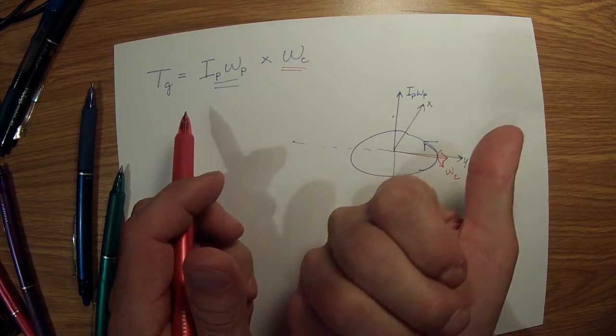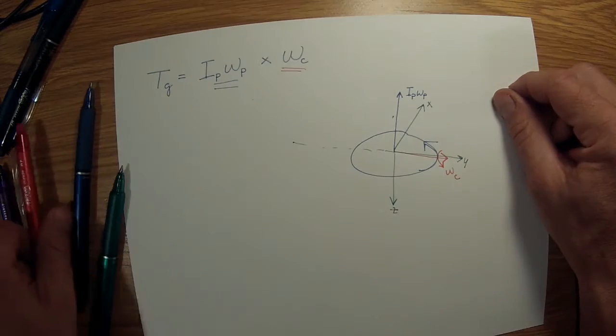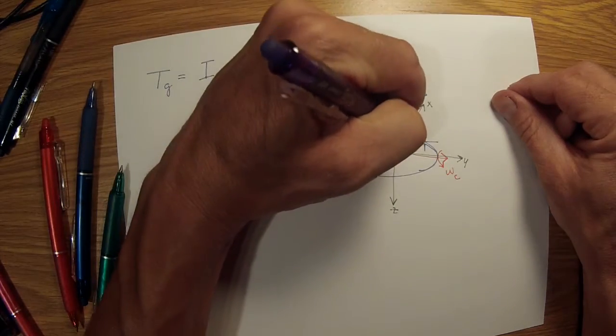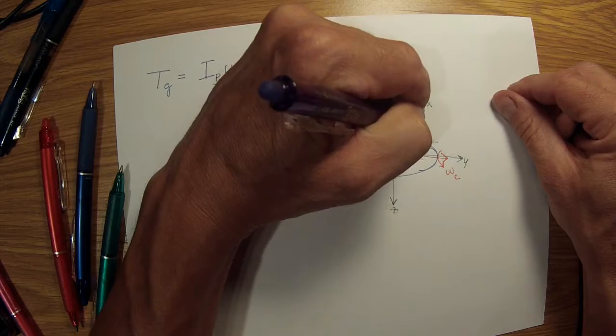So we're going to have a torque down the X axis here in this picture, and that is our Tg.